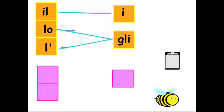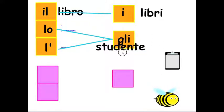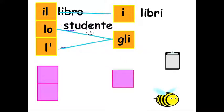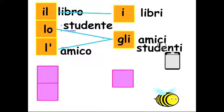Va bene? So, for example, il libro, i libri. Lo studente, l'amico, gli amici, gli studenti.